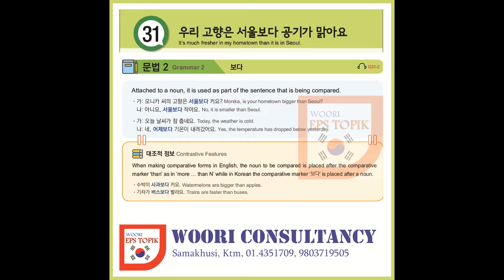Lesson 31, Grammar 2. 사람이면 — if you're human, you compare things. You may notice lots of changes. Here's how to compare two things. It looks like a verb — 보다 — but it isn't a verb here. You put 보다 right after the first noun. The order is different than in English. In English, we say 'Seoul is bigger than Busan,' but in Korean, we literally say 'Busan-보다 Seoul big.'